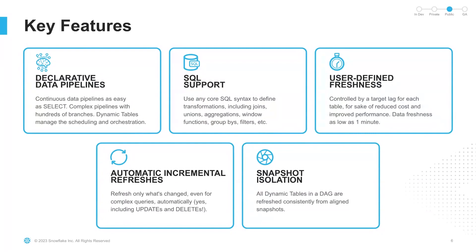Number four is automatic incremental refreshes. We strive to always only process data that has changed since the last refresh — that is what we call incremental refresh. With dynamic tables, we have built-in support for incremental refresh for a broad range of SQL constructs, and we also support updates and deletes in addition to inserts. And finally, snapshot isolation: all dynamic tables in a DAG are always refreshed from a consistent snapshot, meaning the results materialized in a dynamic table will always make sense.